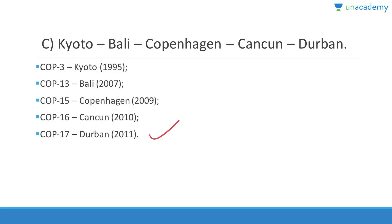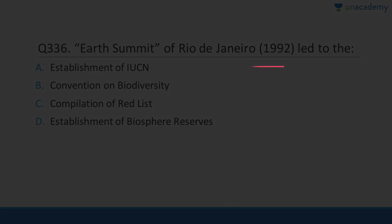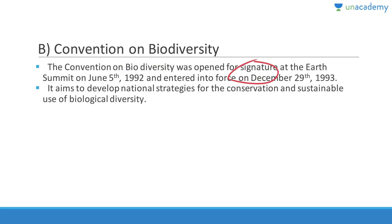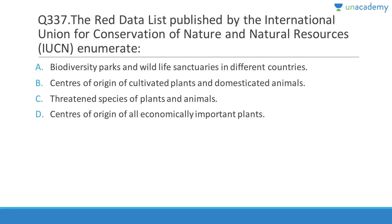Question 336: The Earth Summit of Rio de Janeiro 1992 led to the Convention on Biological Diversity (CBD). Answer is B. The CBD was opened for signature at the Earth Summit on 5th June 1992 and entered into force on 29th December 1993. It aims to develop national strategies for the conservation and sustainable use of biological diversity.